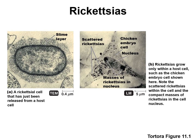Looking at what Rickettsia bacteria look like: the picture on the left shows the bacterial cell has a slime layer on the outside. The slime layer is part of the glycocalyx, made of carbohydrates or sugars, and it provides protection, helps the bacteria stick to cells, and can aid in motility. The picture on the right shows a chicken embryo cell infected with lots of rickettsial bacteria inside — because these are obligate intracellular parasites, they don't survive long outside cells.